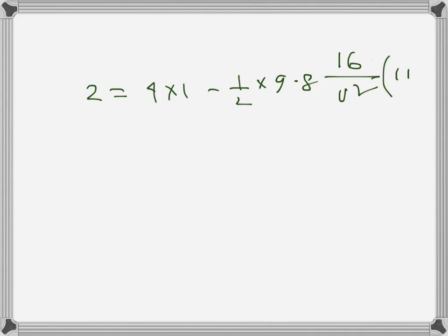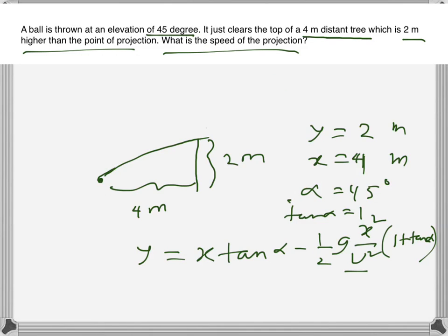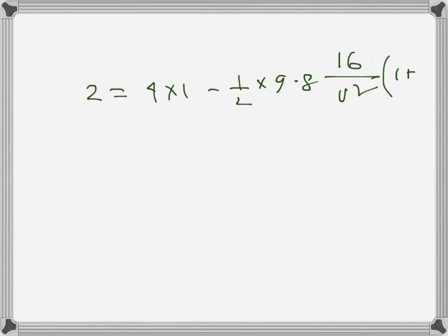and 1 plus tan alpha - tan squared alpha, this is actually tan squared alpha here, sorry, 1 plus tan squared alpha. And this one is 1 squared so it will be 2 here, 4 here, minus 4.9 times 16 over u squared. And 1 plus 1 is 2, 1 squared is 1, so yeah, so that becomes 4.9 times 16 times 2 over u squared and this equals 2.